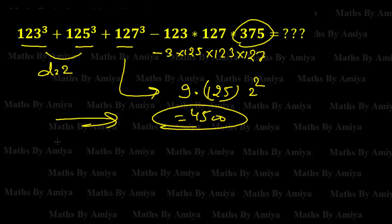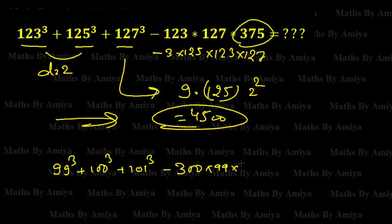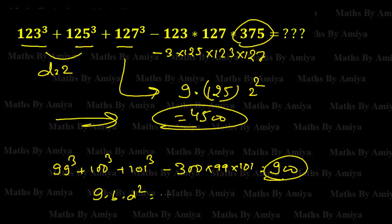The next question is 99³ + 100³ + 101³ - 300 × 99 × 101. The answer is nothing but 900. That is 9 × b × d² = 9 × 100 × 1² = 900, because the middle term is 100 and the gap is 1.